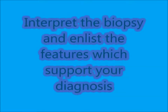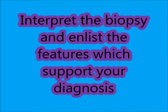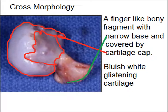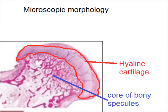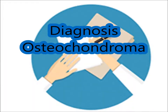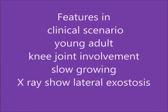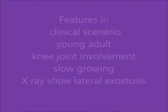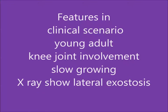For interpretation, we interpret the biopsy and list features which support the diagnosis. Gross morphology shows a finger-like bony fragment with a narrow base covered by a cartilage cap — bluish-white cartilage. Microscopic morphology shows hyaline cartilage and a core of bony spicules. The diagnosis is osteochondroma. Features in the clinical scenario which support the diagnosis are: young adult, knee joint involvement, slow-growing tumour, and X-ray showing lateral bony projection or exostosis.